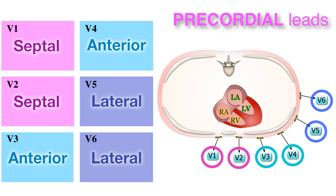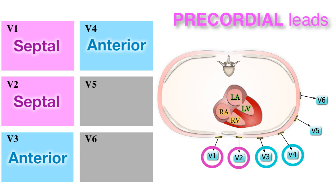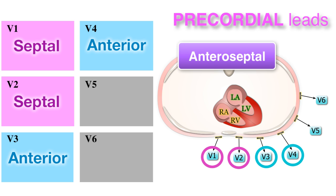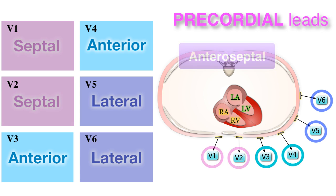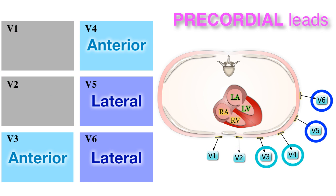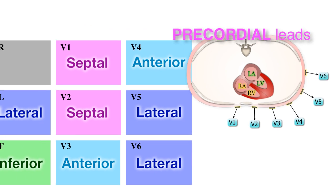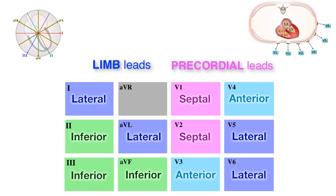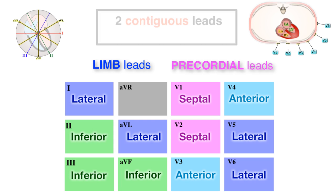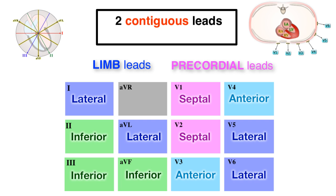When leads V1 to V4 are involved, it is considered anteroseptal, and when it is leads V3 to V6, it will be called anterolateral. Of note, in order to diagnose ischemia or infarction on EKG, at least two leads of one territory must show signs of ischemia or infarction.